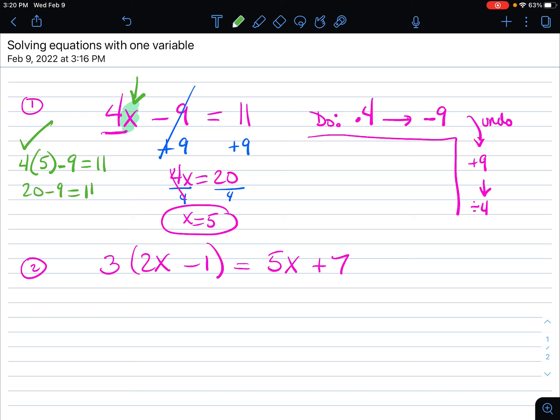20 take away 9 is supposed to equal 11. And 11 does indeed equal 11. So that's how you know that you have your solution. So that's the first type of example.